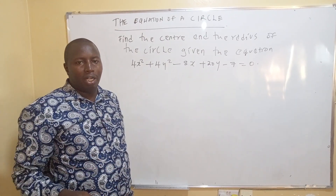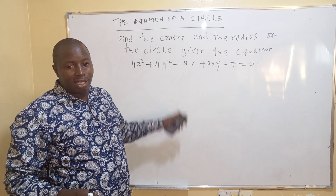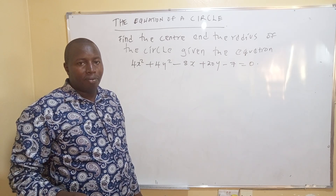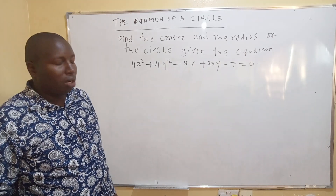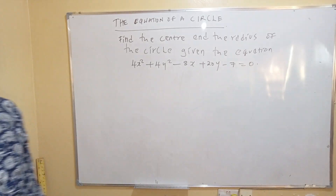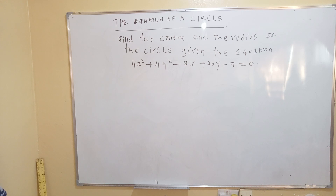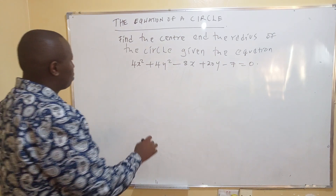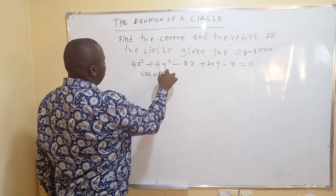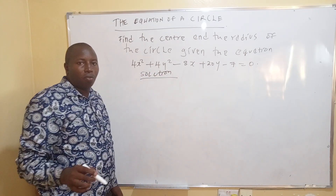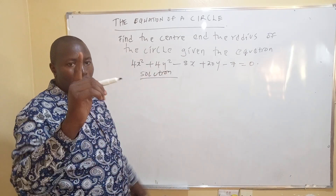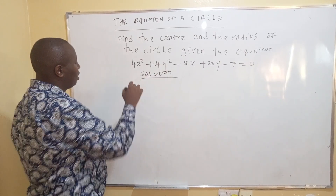You are required to find the radius and the center of the circle. So step number one is to make the coefficient of x squared and y squared equal to 1.